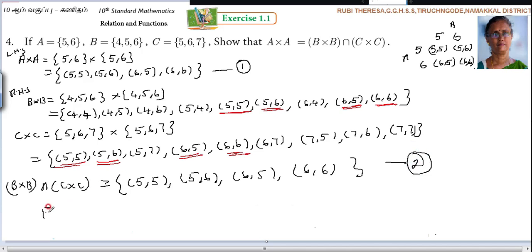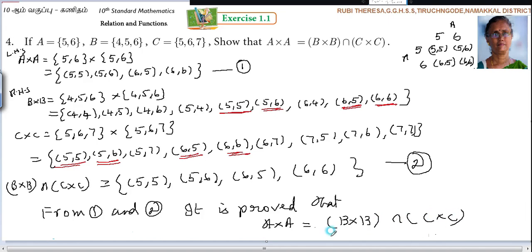This is true. So from 1 and 2, from 1 and 2, it is proved that, it is showed that, it is proved that, A cross A equal to B cross B intersection C cross C. Otherwise you can write LHS is equal to RHS. Therefore A cross A equal to B cross B intersection C cross C.